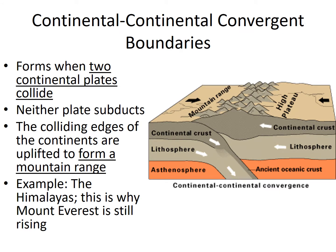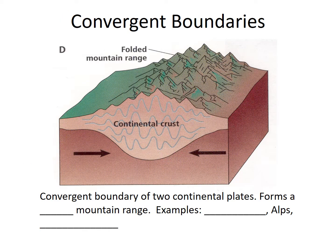Continental-continental convergent boundaries form when two continental plates collide. Neither plate really subducts — the colliding edges are uplifted to form a mountain range, though one does subduct a little bit. An example is the Himalayas, and that's why Mount Everest is still rising. Two continental crusts — the one making up China and the Indian plate — are coming together and forcing up mountains in the Himalayas. Convergent boundaries of two continental plates form a folded mountain range; examples include the Himalayas, the Alps, and the Appalachian Mountains.